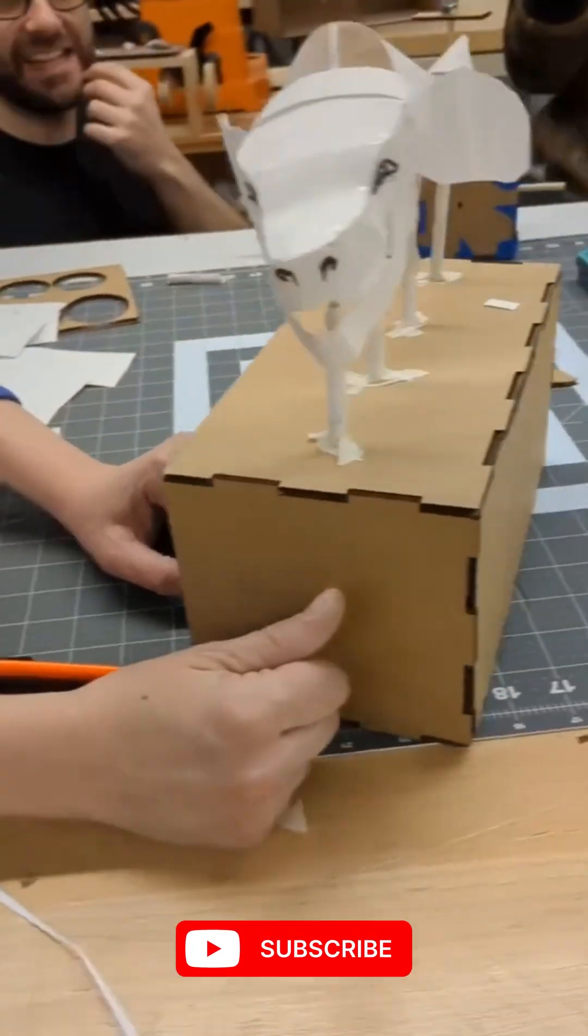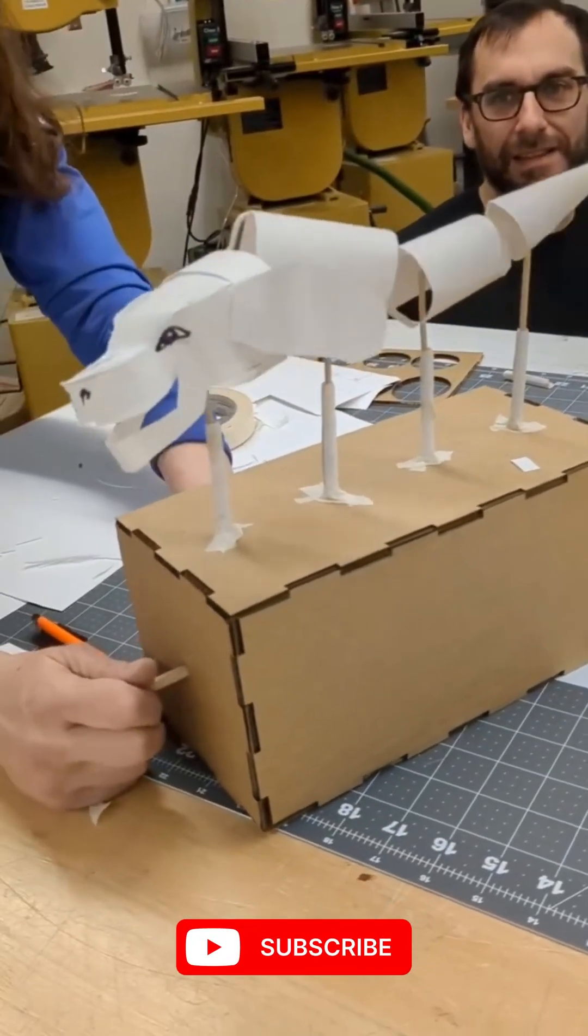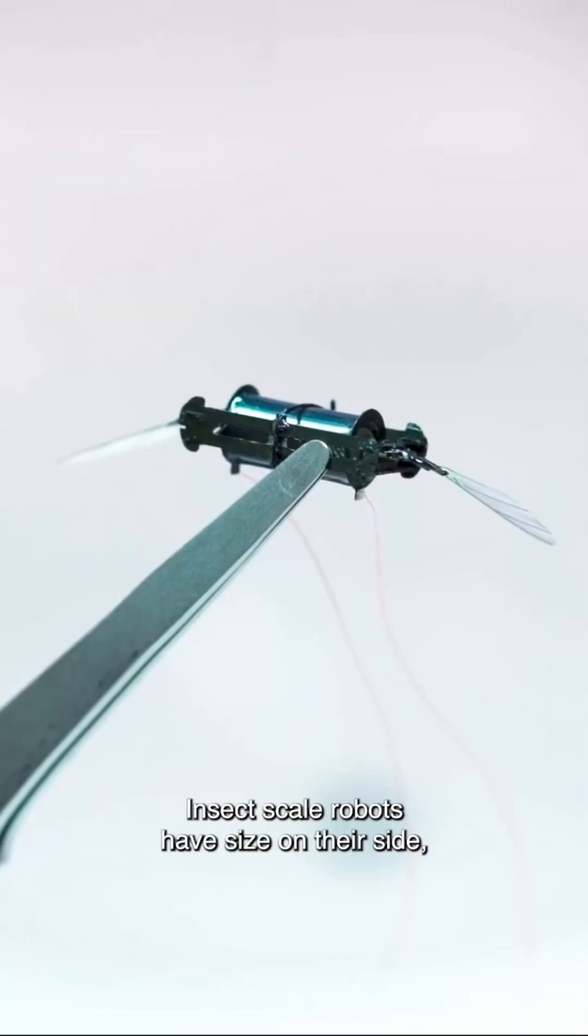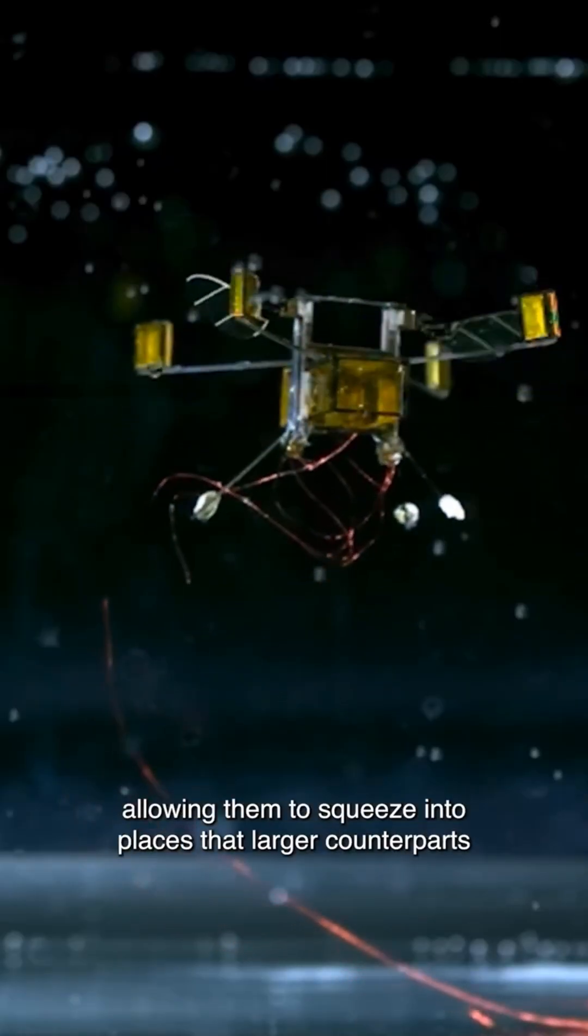In April 2025, MIT engineers introduced a groundbreaking insect-sized robot capable of hopping over obstacles and traversing uneven terrains.